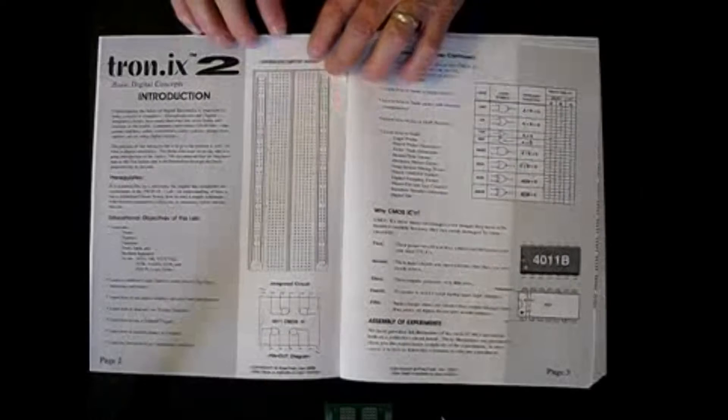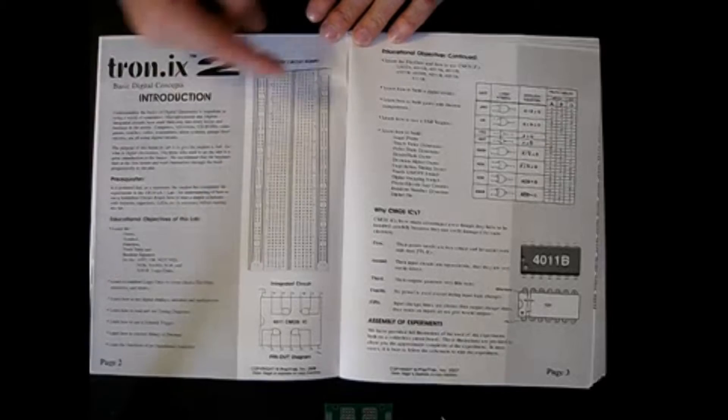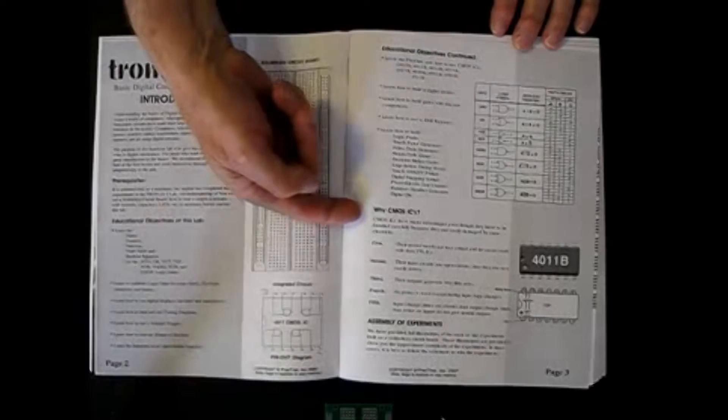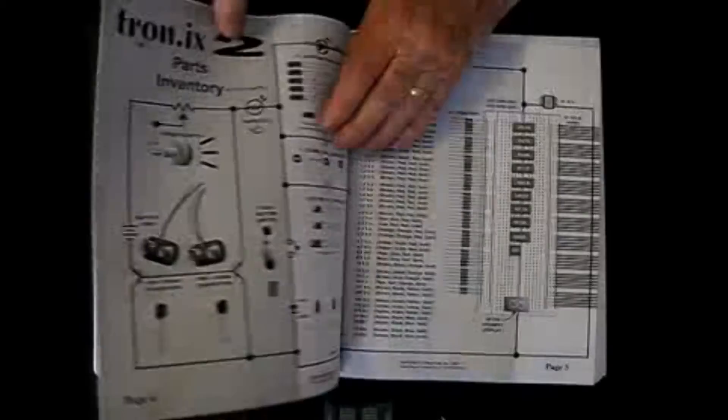As you turn the page, we explain what is necessary. We show you the solderless breadboard, pin-out diagrams for integrated circuits, logic symbols. We explain why we use CMOS ICs in this lab and how to assemble the experiments.